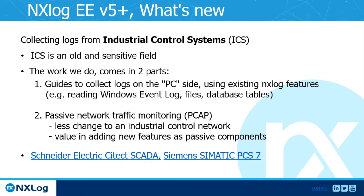Industrial control systems is an old and sensitive field, and our work to collect logs from there comes in two ways. The first way is to use existing NXLog features to ingest logs from endpoints by installing an agent on them. This refers to endpoints that are either servers or PCs, wherever we can install an agent — where we can read Windows Event Log, ingest files, or browse through database tables, the same way we do with a normal server.